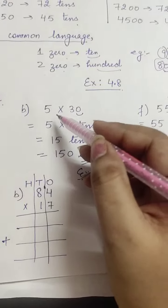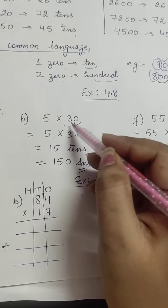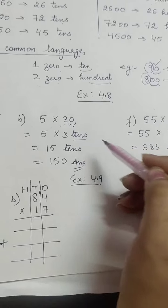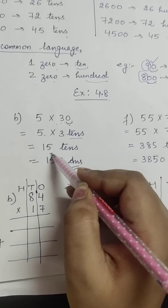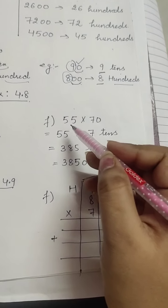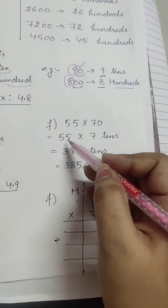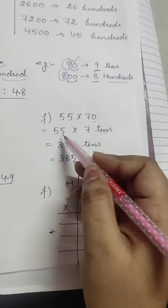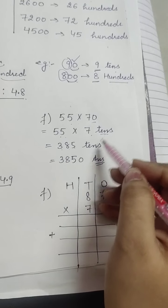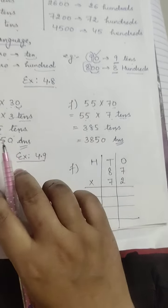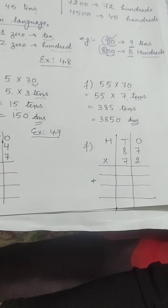Question 2, part B: 5×30. With 30, there is a 10, so you write 3 here and in place of 10 you write a zero. So 5×3 = 15, giving 150 — that is 15 tens. Similarly, 55×70: write it as 55×7 tens. 55×7 = 385, and adding the zero gives 3850. You can solve it in either way.